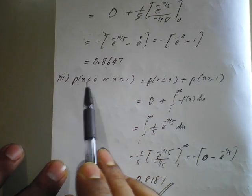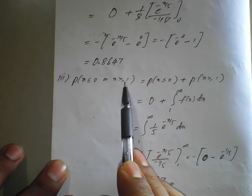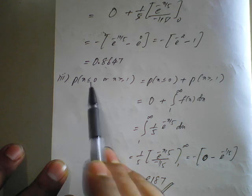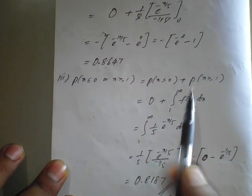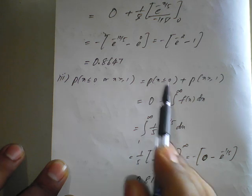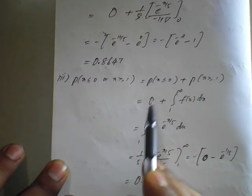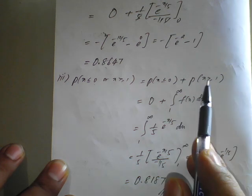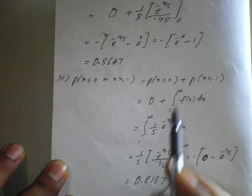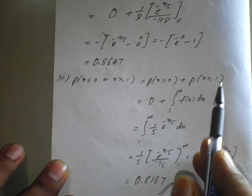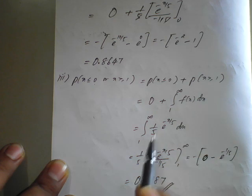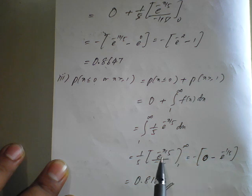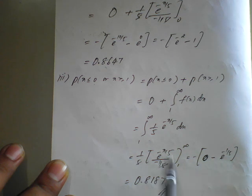For the third part, P(X < 0 or X ≥ 1): using 'or' we add — P(X < 0) plus P(X ≥ 1). Since x less than 0 gives 0 in exponential distribution, P(X < 0) equals 0. P(X ≥ 1) is the integral from 1 to infinity, or equivalently 1 minus P(X < 1). Applying upper and lower limits — e^(infinity) is 0, simplifying — the result is 0.8185.